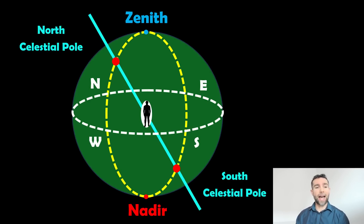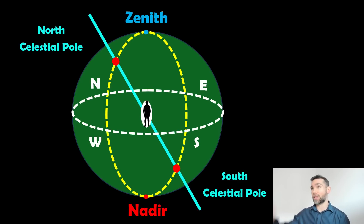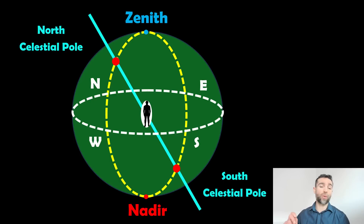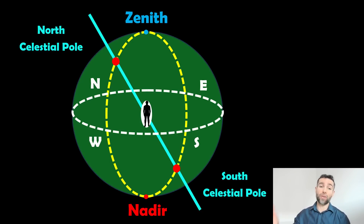Now we need to add in the celestial poles — the north and south celestial poles. The earth is rotating, and going back to that image of the stars moving, when you get to the north and south celestial pole the stars are actually not moving in an arc — they're stationary, and all the other stars move around them. That is essentially the rotation axis of earth, and it's tilted.